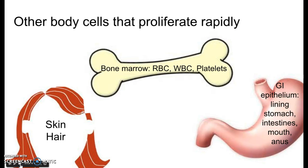Decreased RBCs result in anemia, which usually causes someone to feel very tired. When anemia gets too bad, we treat it with a blood transfusion. When WBCs go down, your ability to fight off infection goes down, so people receiving chemotherapy are what we call neutropenic — very susceptible to opportunistic infections. Finally, platelets are what make your blood clot, so people receiving chemotherapy are at risk for thrombocytopenia — thrombocytes and platelets are basically the same thing — meaning they're at risk for hemorrhage, bleeding, or bruising.